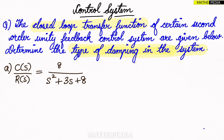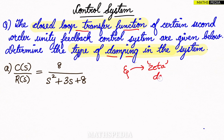In this video we are going to find the type of damping for a given system. They will give you a closed-loop transfer function for which we have to find the type of damping. Before proceeding, we have to understand damping, which is given by the damping factor or damping ratio zeta. Zeta decides the type of damping in the given system.